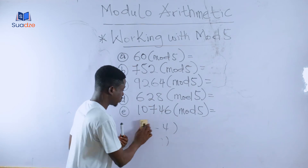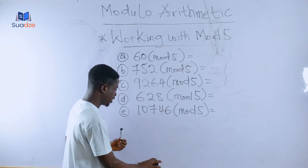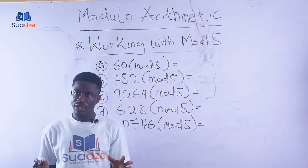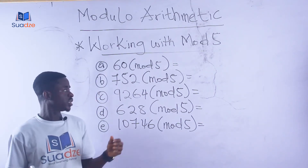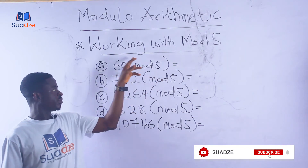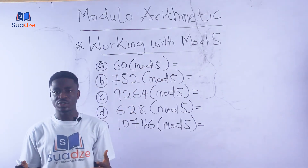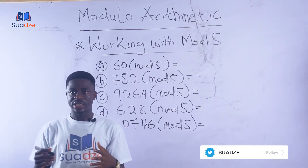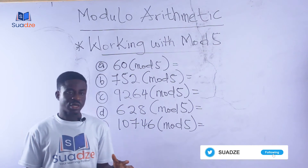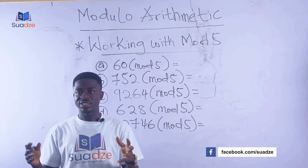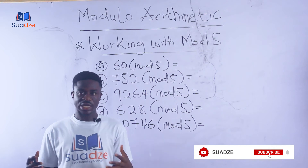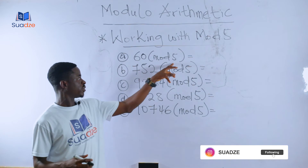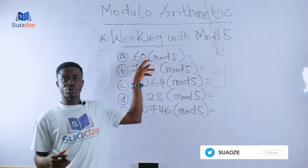Let's look at the following examples. In normal modulo arithmetic, you subtract the modulus from the integer until you get a positive number you cannot subtract from anymore. But when dealing with a very large number, that takes a long time. So here is the trick: this is modulo 5, and the last digit is zero.